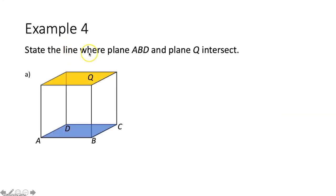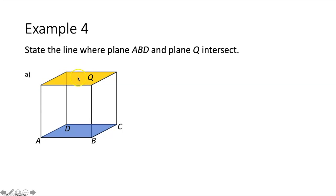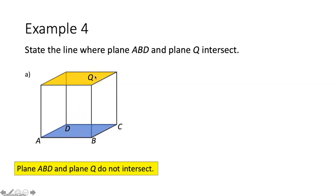Example four says state the line where plane ABD and plane Q intersect. Plane ABD would be the bottom of this cube because those three non-collinear points describe the blue plane. Plane Q is the orange top of our cube. The top and bottom of a cube, even going on indefinitely forever in either direction, would never intersect. So plane ABD and plane Q do not intersect.